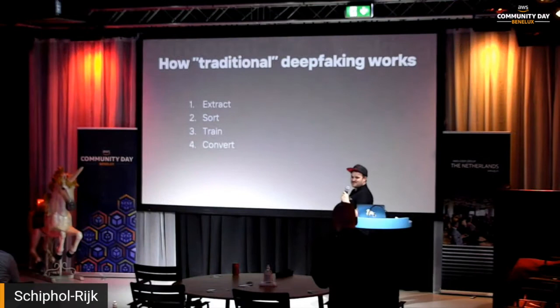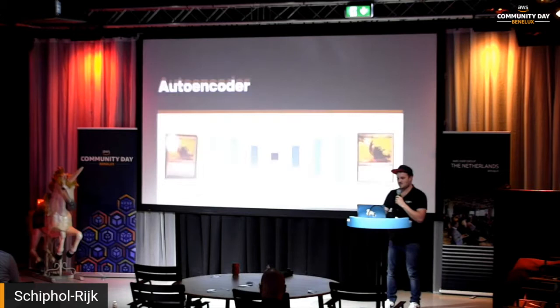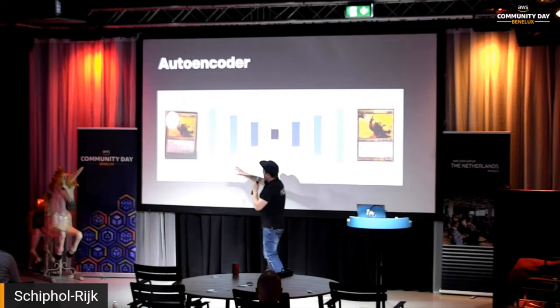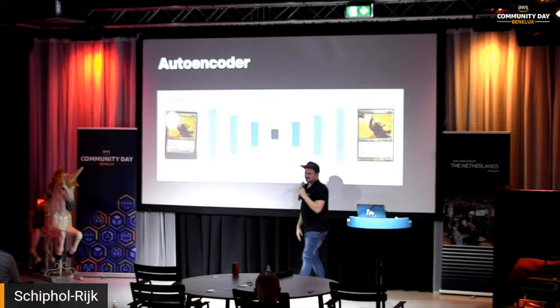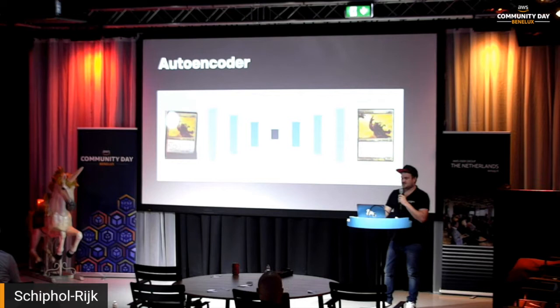Traditional deep faking goes through four steps: extract, sort, train, and convert. Two main technologies are used: autoencoders, which you can imagine as compressing images — making them more fuzzy — and then decompressing those images and making the resolution good again. They call this dimensionality reduction. Google is actually using this right now as a kind of compression, and you'll probably see a lot more of it in the future.